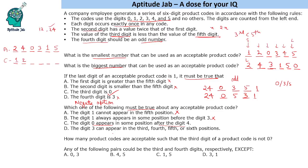Option C says digit 0 appears in some position after digit 4. Let us try to prove it false. We already saw 0 comes after 4 when we start with 2 and 4. But what if we start with 1 and 2? Then we need 0 to come before 4. If we put 0 in position 3 and 4 later, that is a valid arrangement. So 0 does not always appear after 4 — option C is also false. Since three options have been eliminated, the fourth must be the answer.